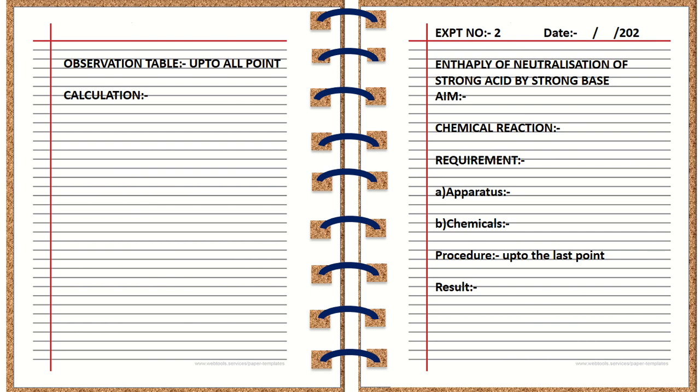If anything remains to be written on the right-hand side, it should continue on the right-hand side of the next page. Similarly, if any calculation is left, it should continue on the left-hand side of the next page. Experiment Number 3 is the heat of displacement of copper from copper sulfate. The date should be mentioned, along with the aim, chemical reaction, requirements, apparatus, chemicals, and procedure up to the last point. The result should be on the right-hand side, and as usual the observation table and calculations should be on the left-hand side.